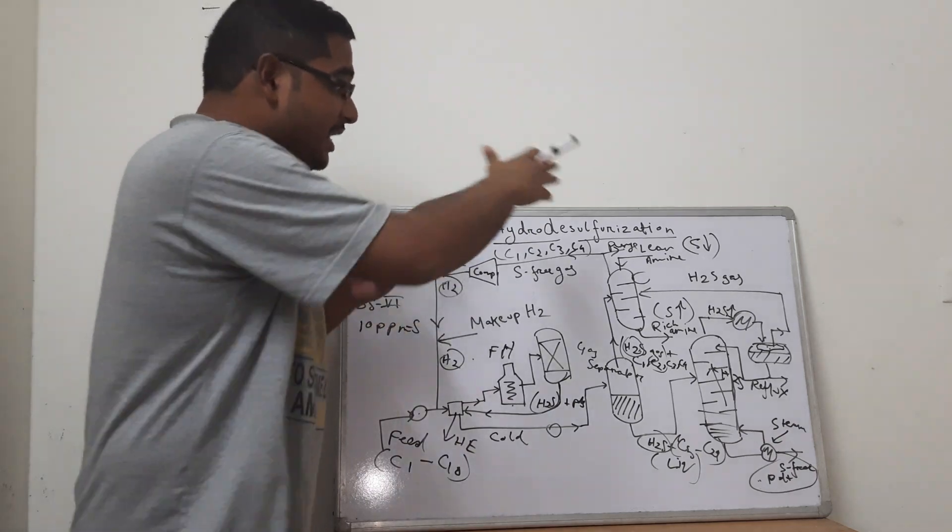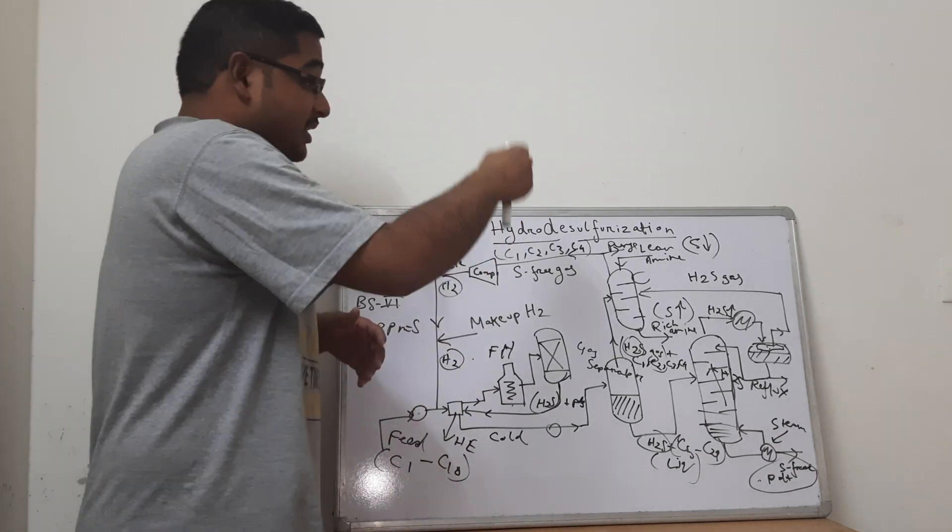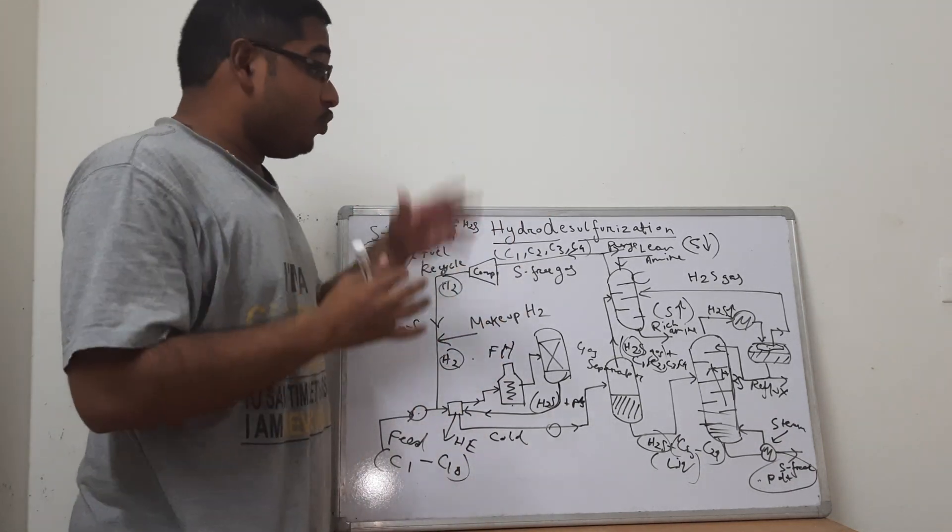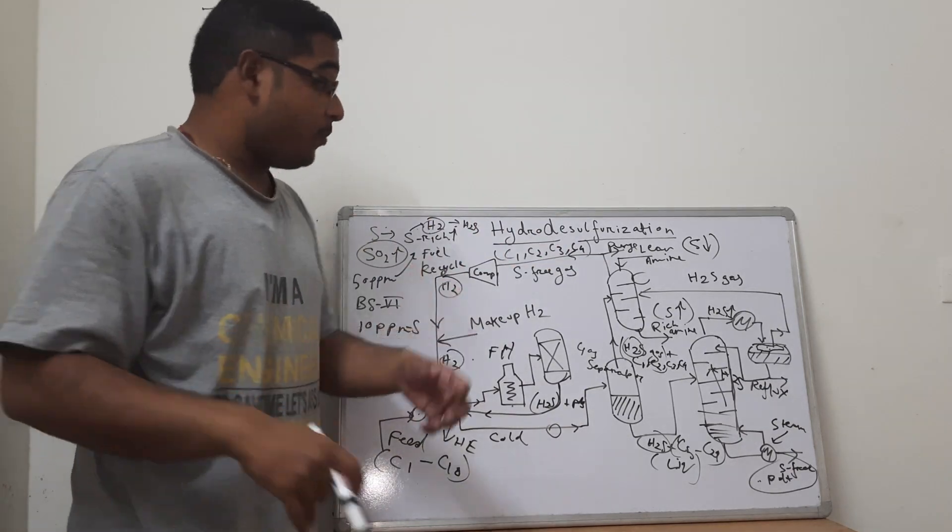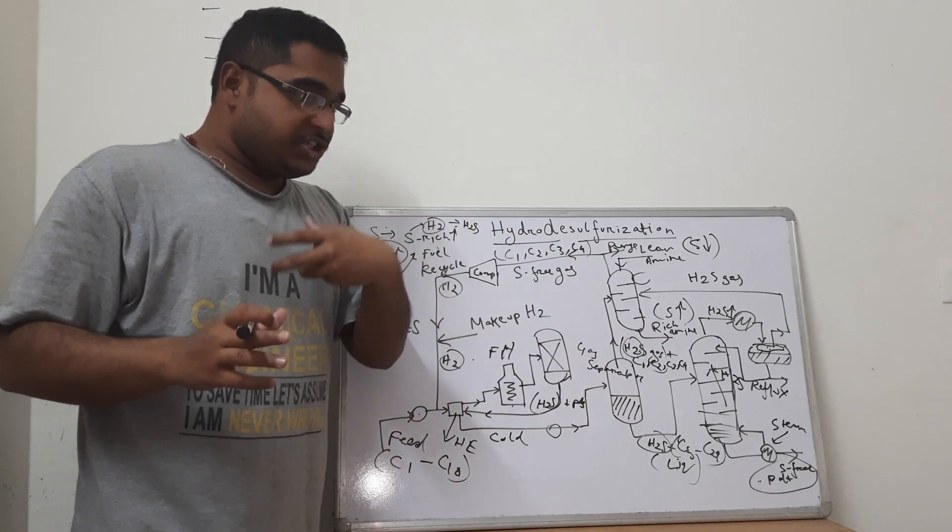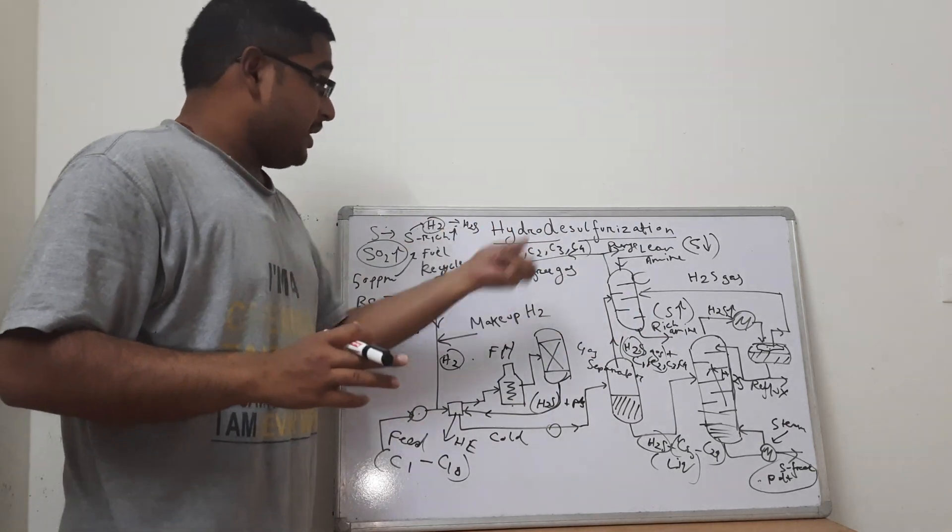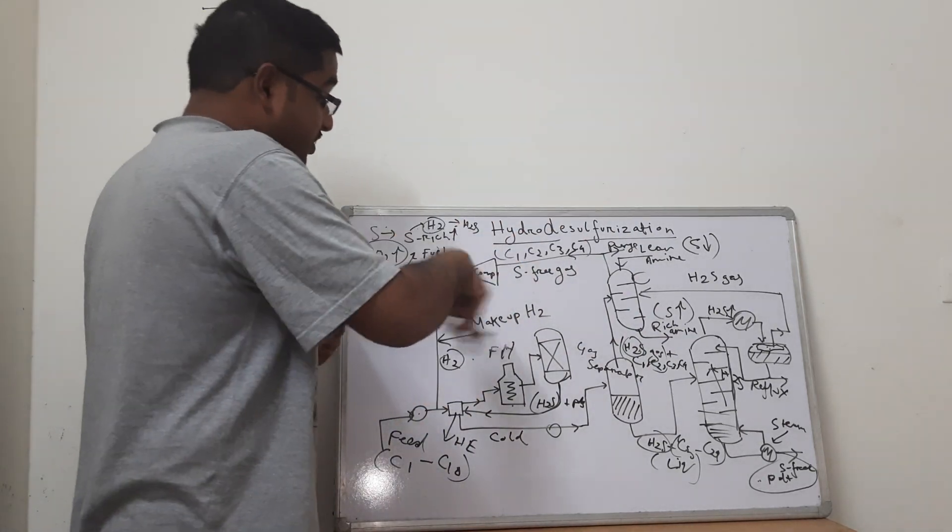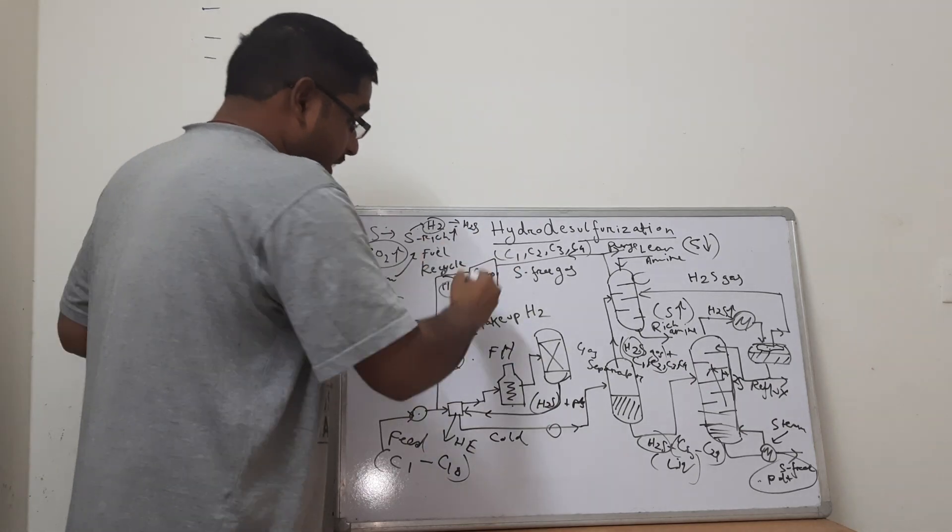And whatever remains is further separated in a distillation column and all the H2S is being attacked by the lean amine that is less sulfur amine and the sulfur is being absorbed by the amine due to some chemisorption reaction, chemical absorption and rich amine that is sulfur rich amine is going out of the chamber and sulfur free gases is escaping out from the top which is recycled back.